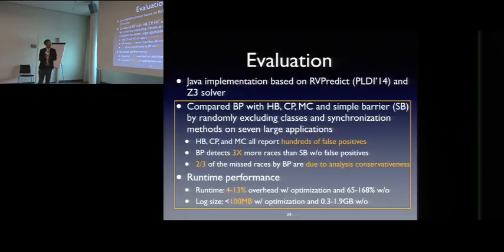Evaluation. So this is Java application based on how we predict, which is race detection on MC. We compare the barrier, which happens-before, causal-precede, maximal-causality, and also the simple barrier approach. And based on two kinds of randomly excluding classes, and also excluding all synchronization methods on seven large applications. And we found that all these previous precise algorithms report false positives. And barrier pairs compare to simple barrier, which is very conservative, detects three times more races without false positives. And two-thirds of the missed races, the barrier pair, are due to analysis consolidation. And runtime performance. With and without our reachable address computation, the runtime overhead is 4% to 13%. But without the optimization is a lot more larger. And log size with optimization on these seven benchmarks is 100 megabyte.